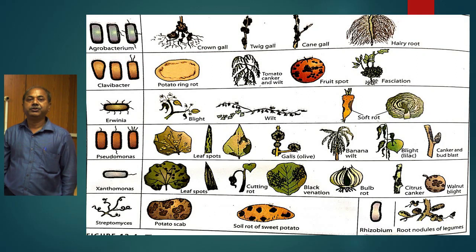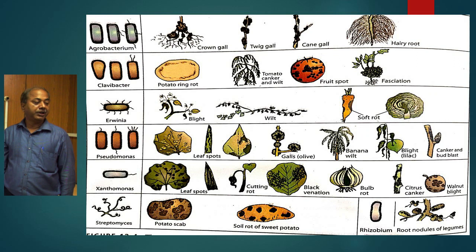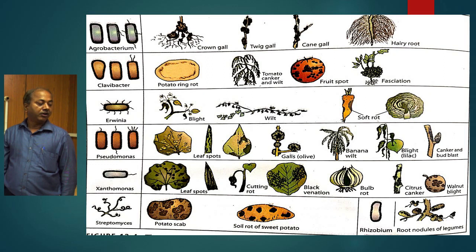Regarding bacteria, which cause disease in plants: bacteria are of two kinds — gram-positive and gram-negative — identified on the basis of a staining method developed by Christian Gram in the year 1884. The genera are Agrobacterium, Clavibacter, Erwinia, Pseudomonas, Xanthomonas, and Streptomyces. Out of these six genera, two — Clavibacter and Streptomyces — are gram-positive bacteria.